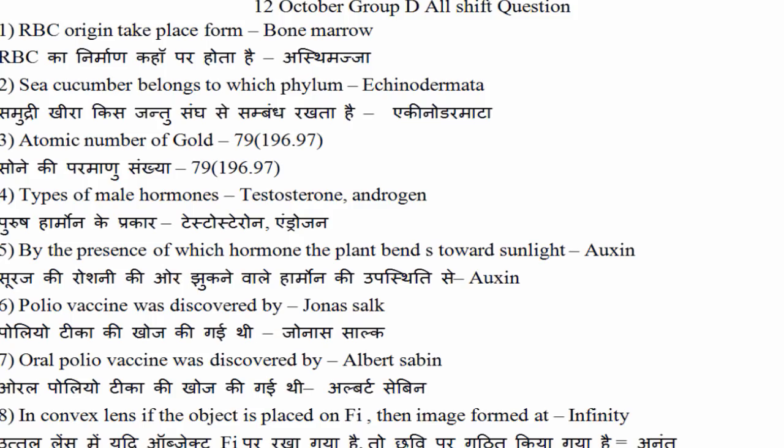Polio vaccination किसके द्वारा discover की गई थी — तो Jonas Salk ने polio की vaccination discover की थी. लेकिन जैसे कि question number 7 में लिखा है, जो oral polio vaccination है, पीने वाली जो दवाई थी, वो Albert Sabin द्वारा discover किया गया था.